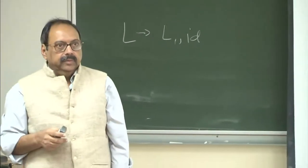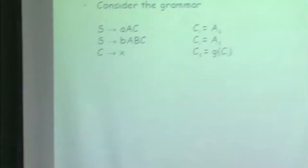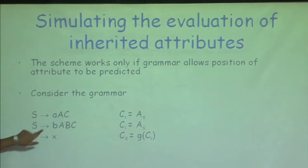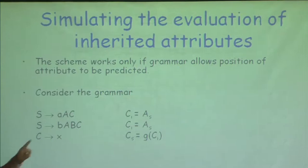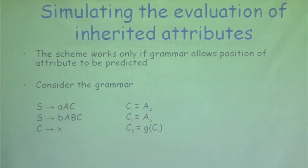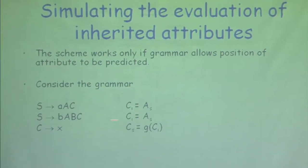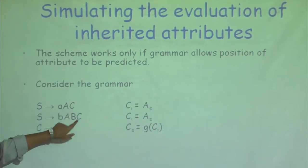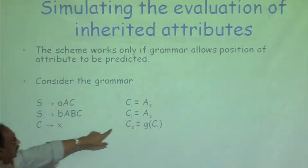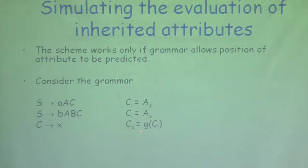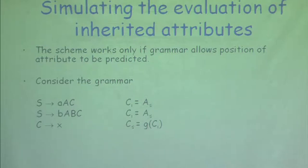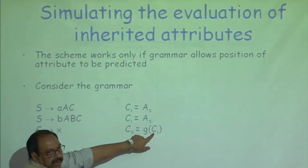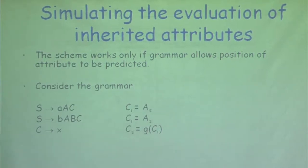Now suppose I get into a situation where I do not know what this predetermined place is — then the scheme is going to fail. Let us look at an example grammar. We have two rules for S: S goes to lowercase a, A, C and S goes to B, A, B, C, and C goes to X. It happens that C inherited is a copy of A synthesized. Inherited attribute of C is a copy of A synthesized, and corresponding to this rule, C synthesized is a function of C inherited.